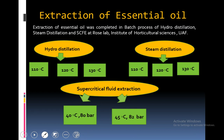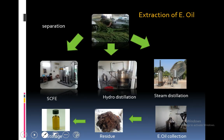Extraction of essential oil was completed in a batch process using hydro distillation, steam distillation, and supercritical fluid extraction at Rosa Lab Institute of Horticultural Sciences, University of Agriculture, Faisalabad. Hydro distillation and steam distillation were done at three temperatures: 110, 120 and 130°C. Supercritical fluid extraction was performed at 40°C and 45°C, keeping pressure at 80 and 82 bar. After extraction from the hemp plant, essential oil was collected and stored in dark colored bottles at moderate temperature. Residue was discarded.